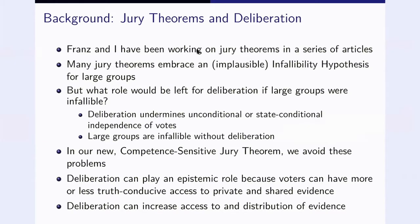Franz and I have been working on jury theorems for a while now. There's a series of articles and we recently finished an entry for the Stanford encyclopedia. One thing that we've been struggling with for a long time was this dominance of the implausible infallibility hypothesis in the literature. Most jury theorems just assume that if the group is large enough, then the group basically converges in group competence to one. And if you are in a situation like that, it's very difficult to say what kind of distinct epistemic contribution deliberation could make. First of all, because deliberation also has some drawbacks. It tends to undermine at least the more traditional independence assumptions. And secondly, because the groups are already infallible if they're large enough anyhow. So why deliberate?